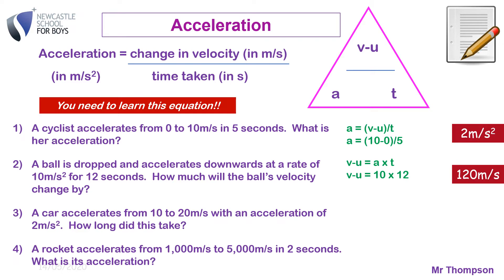Number three: a car accelerates from 10 to 20 meters per second with an acceleration of 2 meters per second squared. How long did it take? Using the equation, T equals change in velocity divided by acceleration. Put the numbers in and you get an answer of 5 seconds. If it's going from 10 to 20 meters per second and the acceleration is 2 meters per second squared, that means every second it goes up by 2, so it would take 5 seconds — going 10, 12, 14, 16, 18, 20.